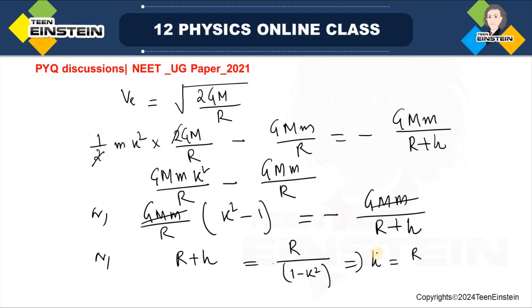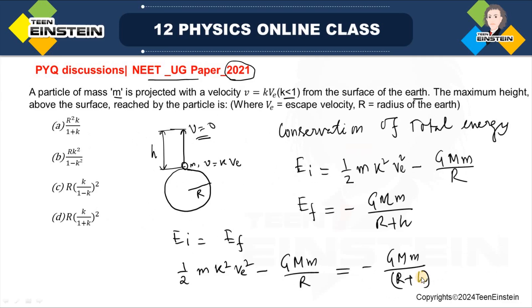With minus sign, I can write this as R over 1 minus K square. So R plus h, I have to find h. So h will be R times 1 over 1 minus K square minus 1, which gives K square R divided by 1 minus K square. Let us check the options - so option B will be the correct answer for this question. Thank you.